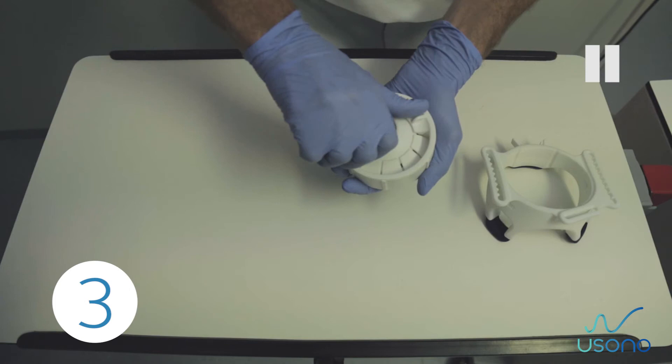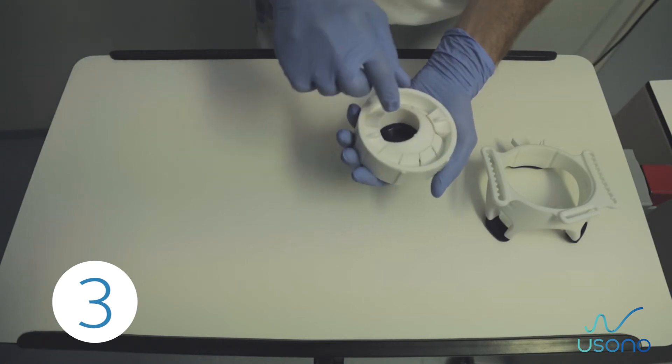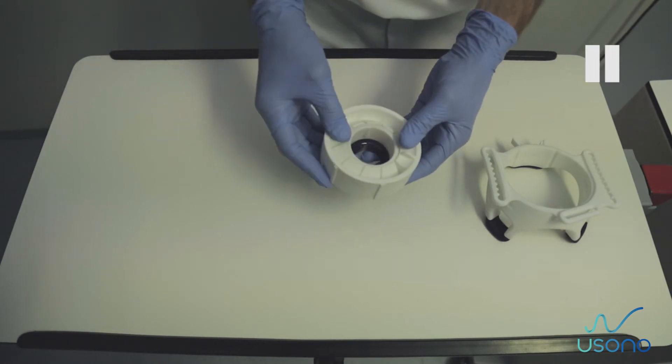Step 3. Holding the bottom part, press and rotate the sphere clockwise until the part is locked in place.